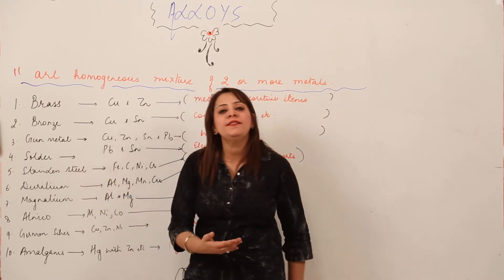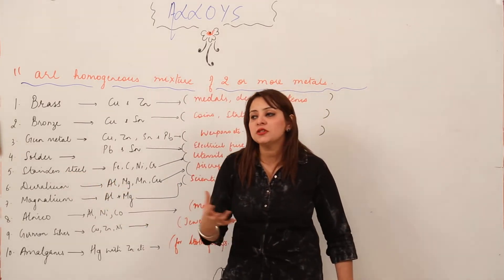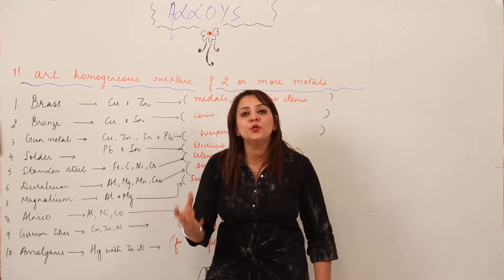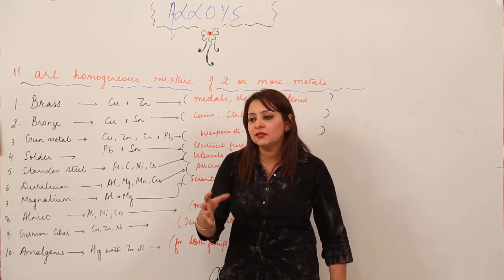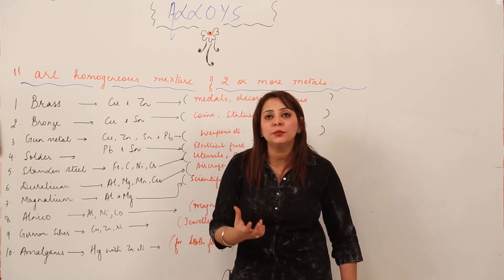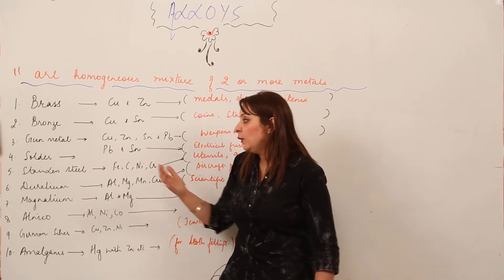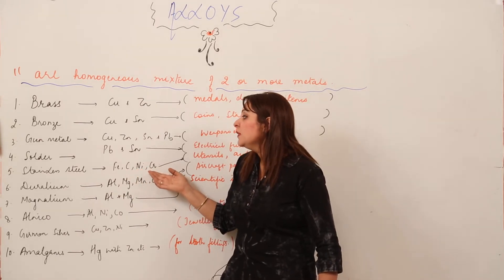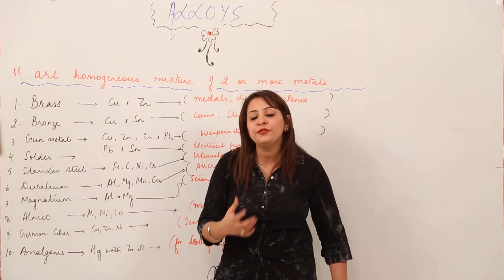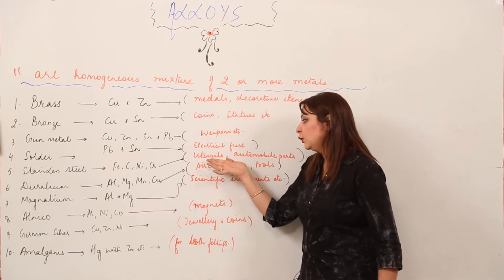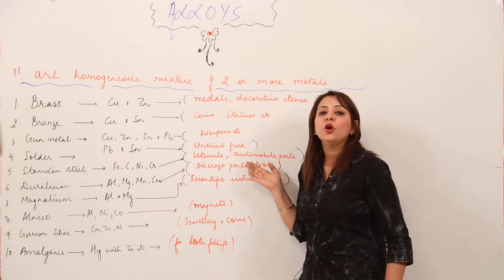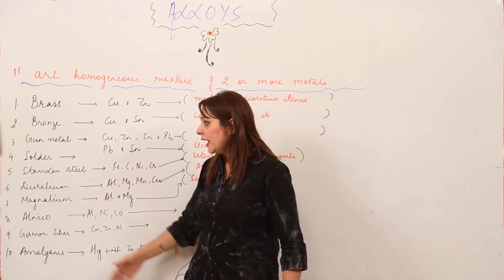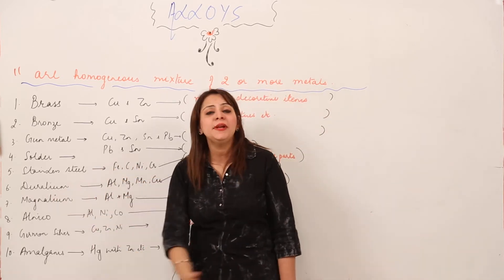Next is stainless steel, which we are all familiar with — most kitchen utensils are made from it. In stainless steel, iron is mixed with carbon, nickel, and chromium. This makes the iron corrosion-free, which is why it is used in making utensils and automobile parts.